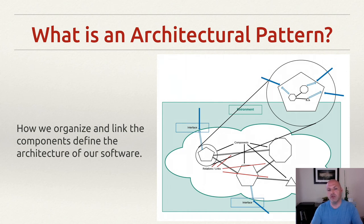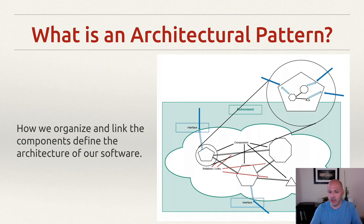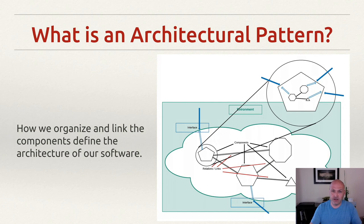In object-oriented programming, we often refer to this as encapsulation. This is true of all of the components of your system as well, and your system as a whole. To use the system, your user needs to know and understand its interface — most commonly, a user interface that the user uses to interact with the system. Within our own system, we're going to look at opportunities to define interfaces around components so that we can define a well-structured system that allows us to grow, add new components, and change components out. This very idea is the essence of a software architectural pattern — it's how we organize and link the components that will define the architecture of our software.